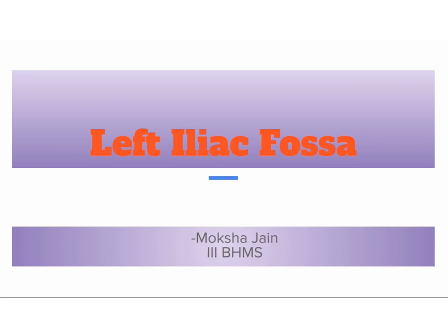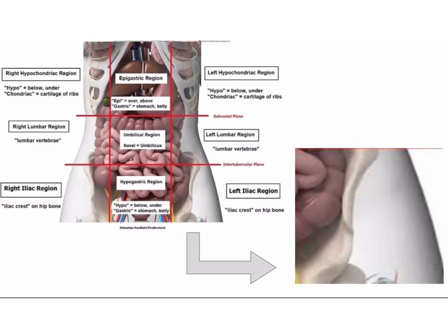Hello everyone, I am Moksha and I am going to talk about the left iliac fossa. The abdomen is divided into 9 regions by 2 vertical and 2 horizontal imaginary planes. We are going to see the left iliac region, which is just below the left lumbar region and beside the hypogastric region.